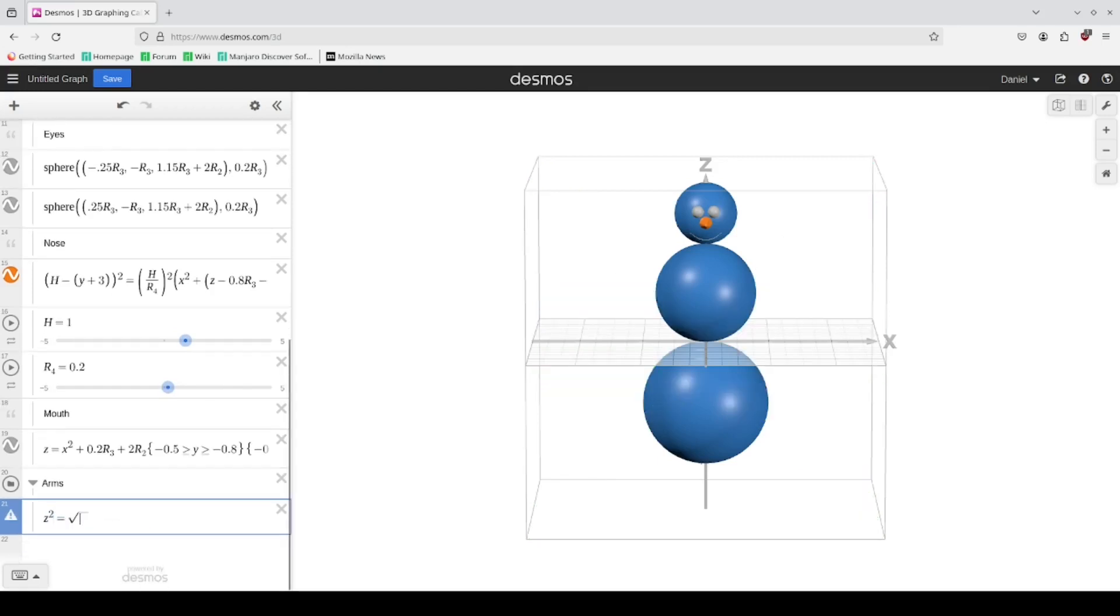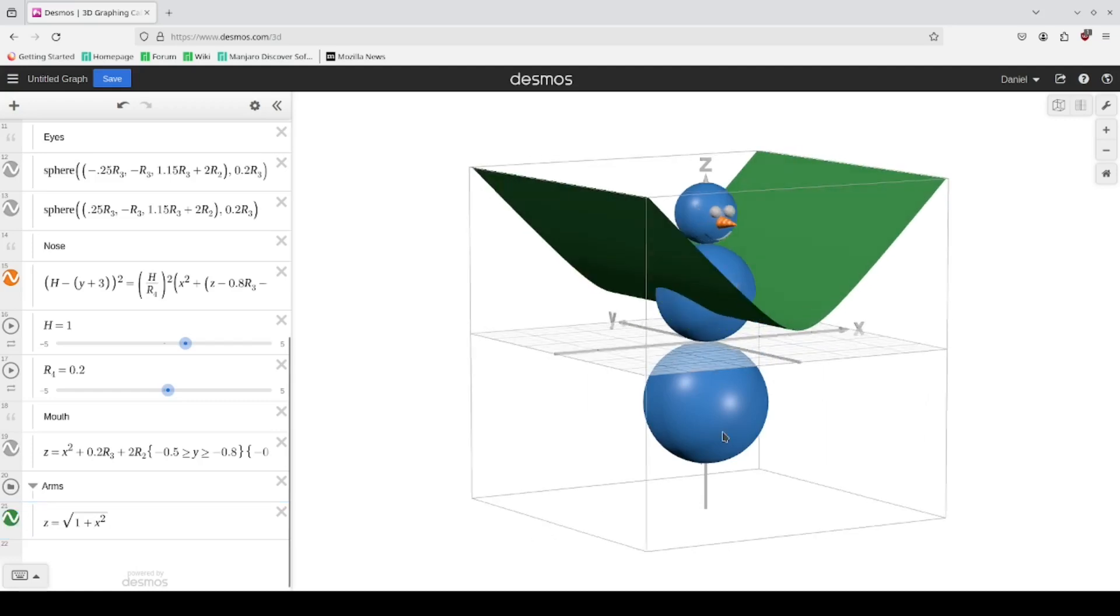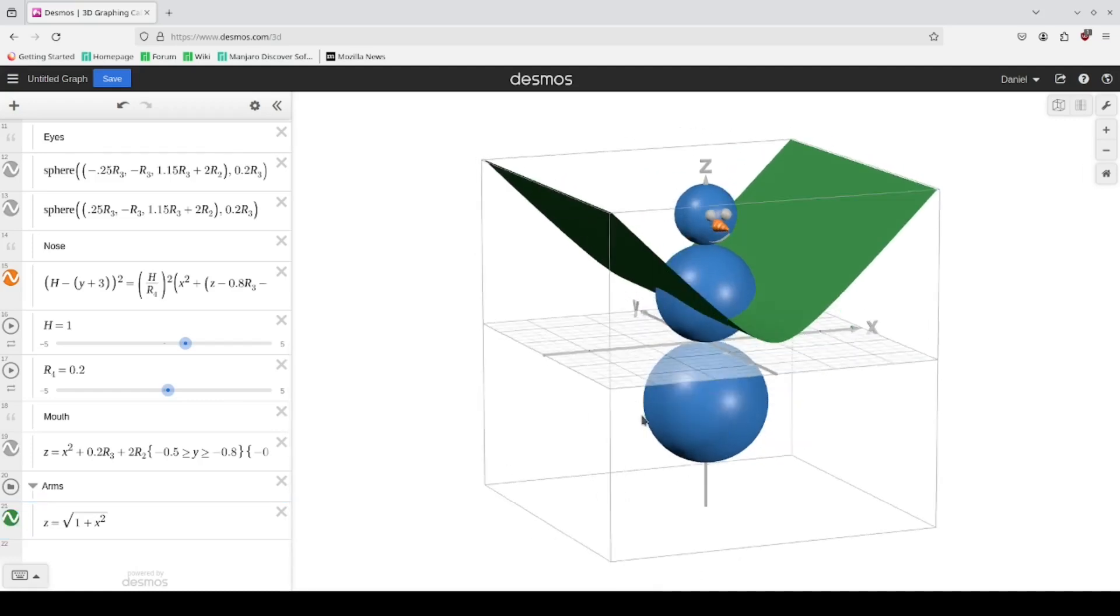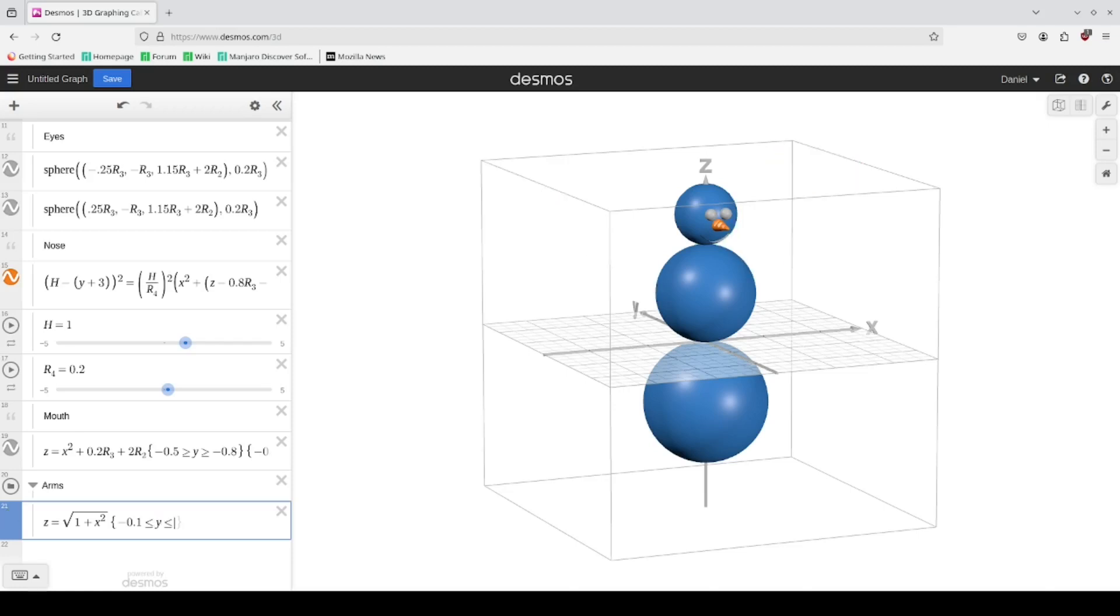So this should be z squared minus x squared equals one. If we solve for z that gets you z equals the square root of one plus x squared. Let me gain just two, flip that, it's an x squared. In this case we're going from y's from minus 0.1 to positive 0.1.